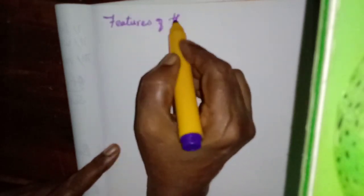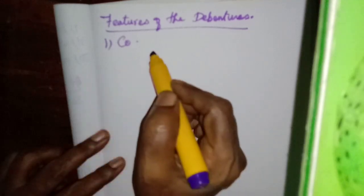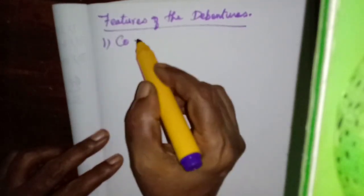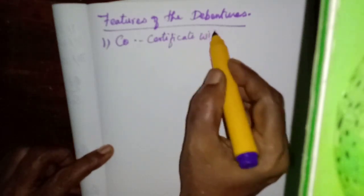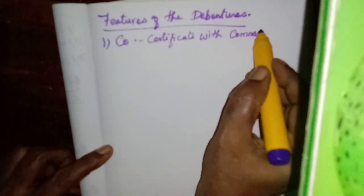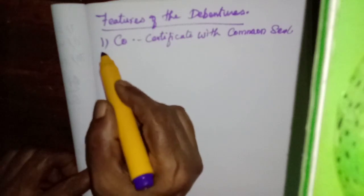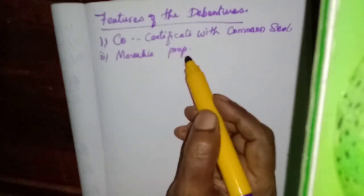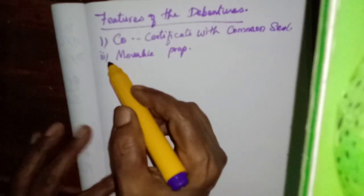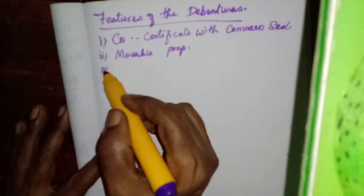Now we will learn the features of debentures. Debentures are issued by the company. It is like a certificate issued by the company with the common seal — the seal of the company. This debenture is a movable property. The debenture holders are the creditors of the company.